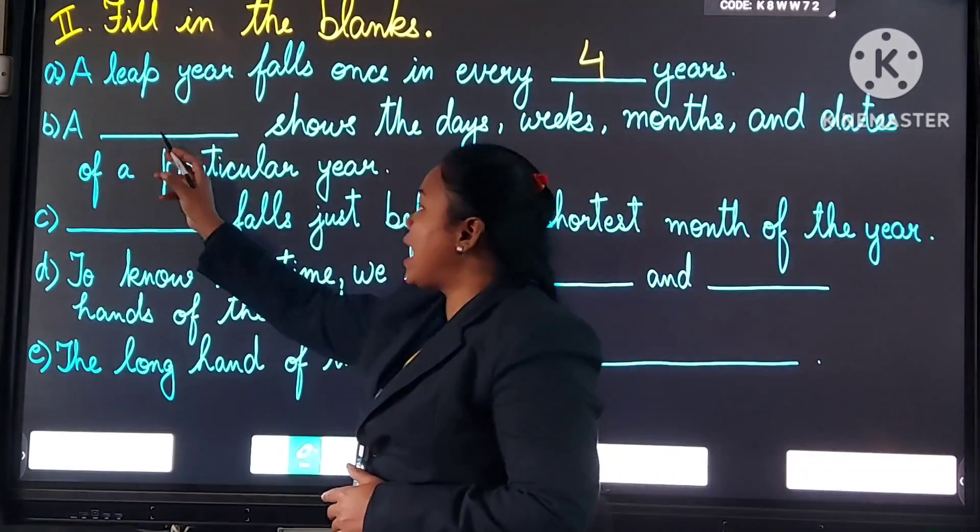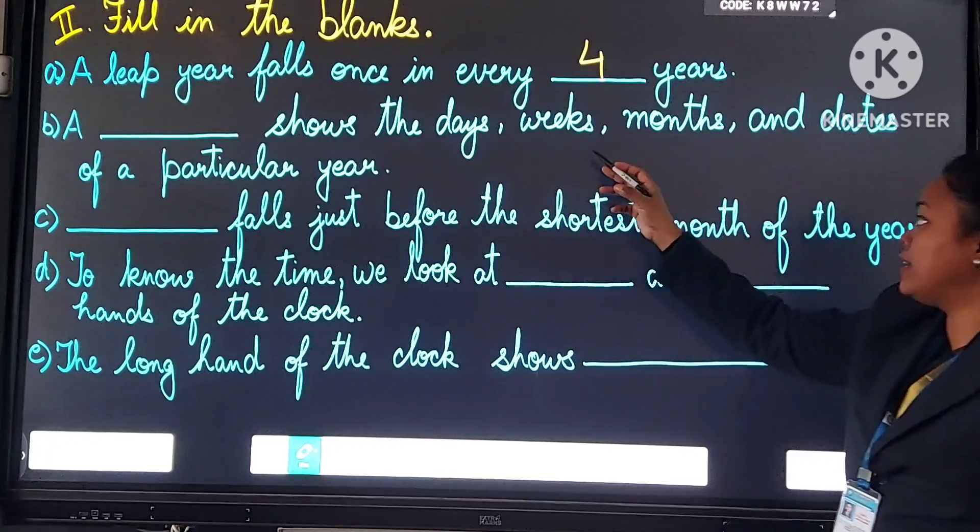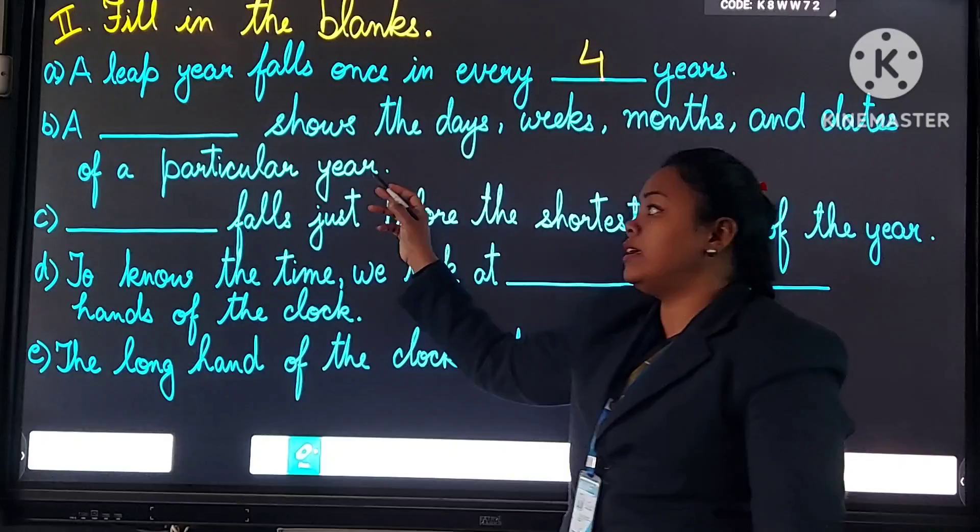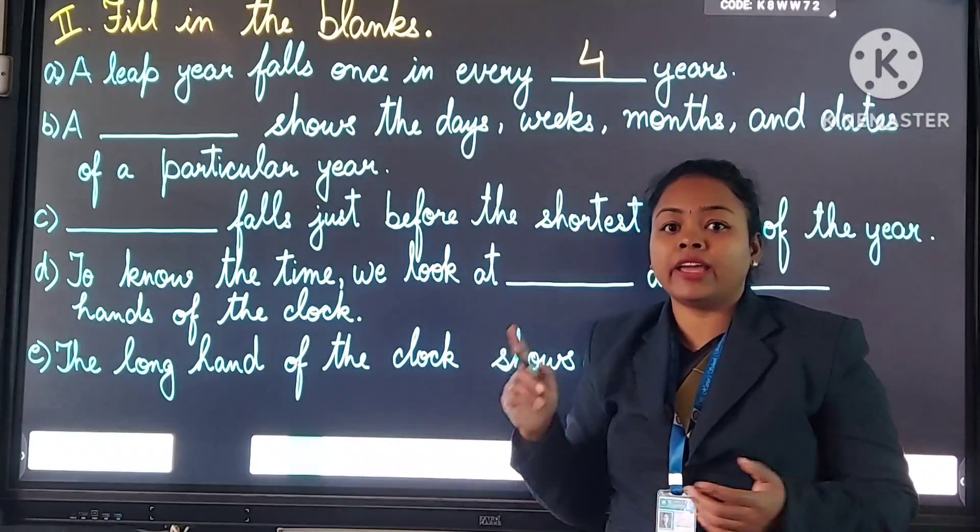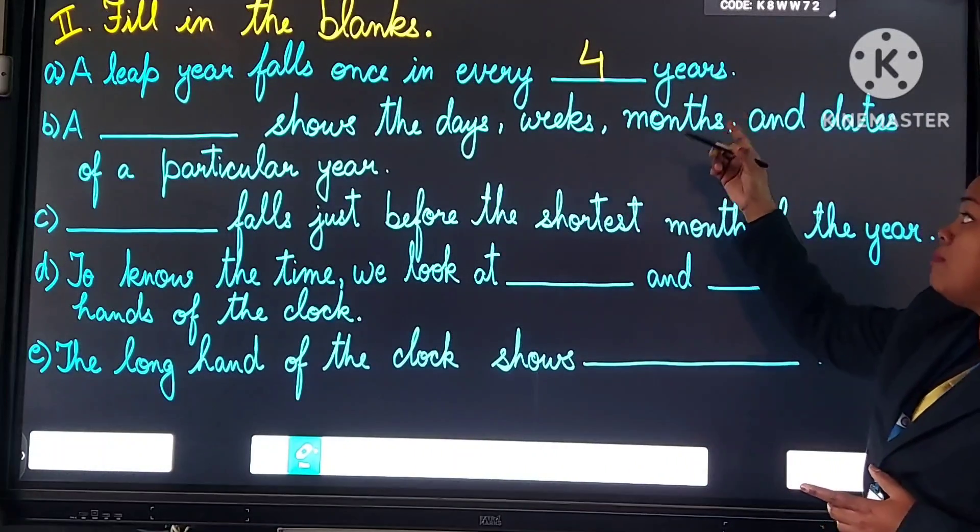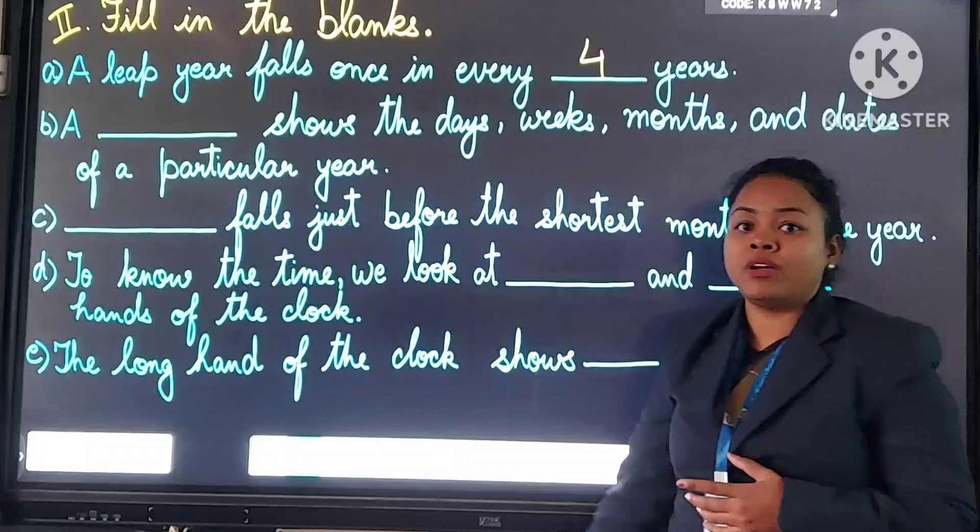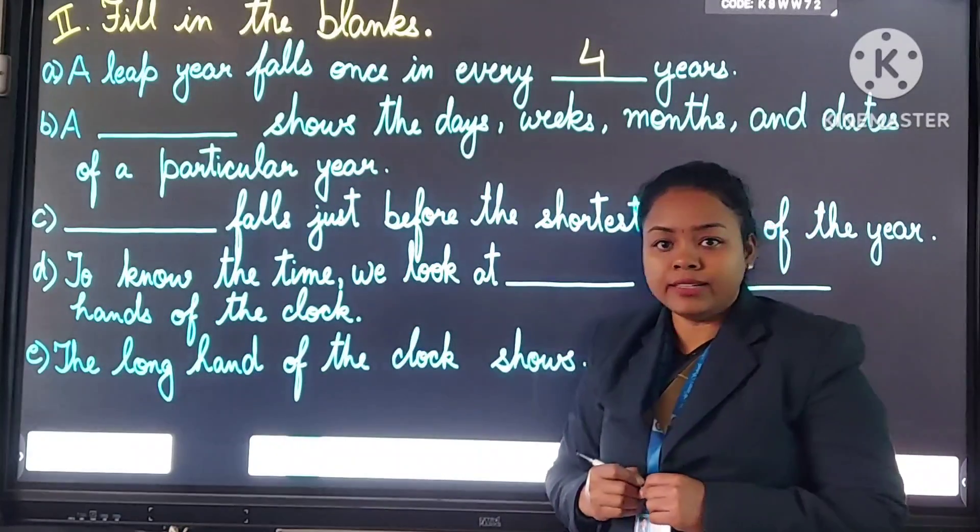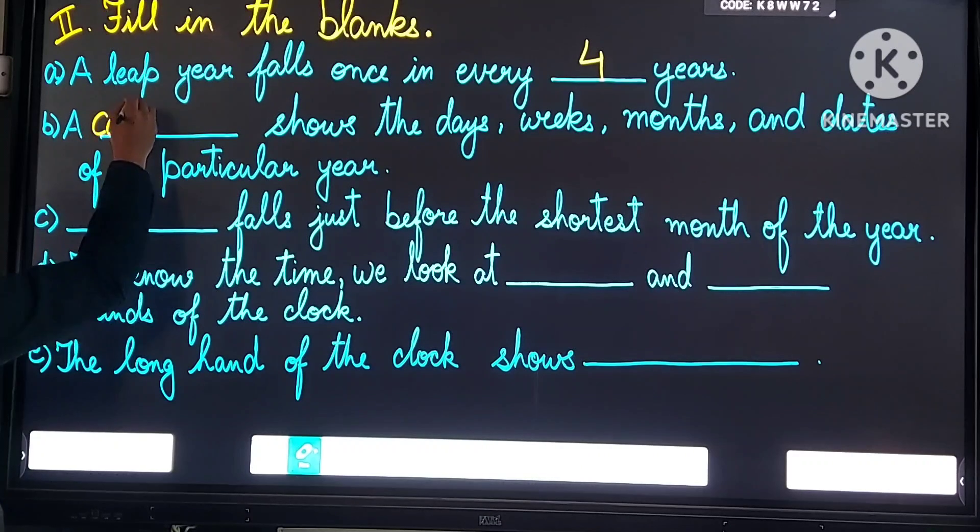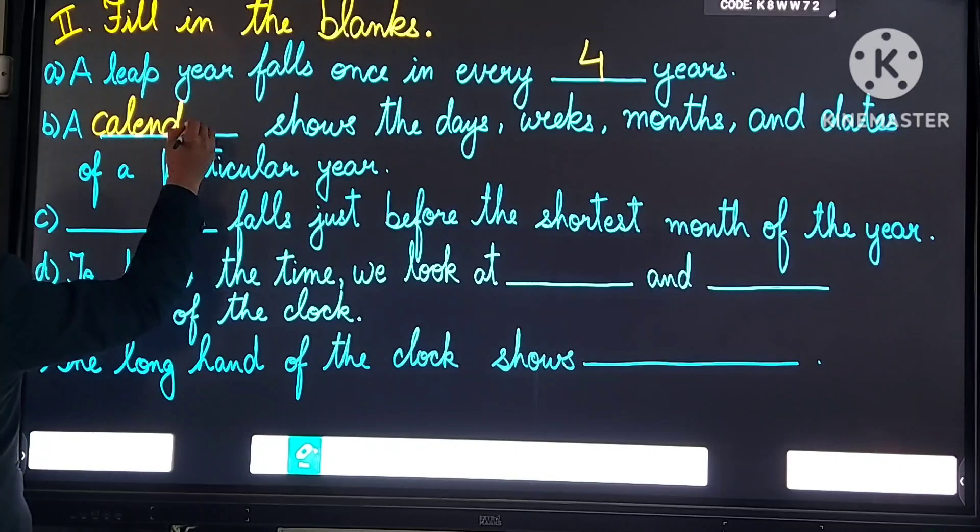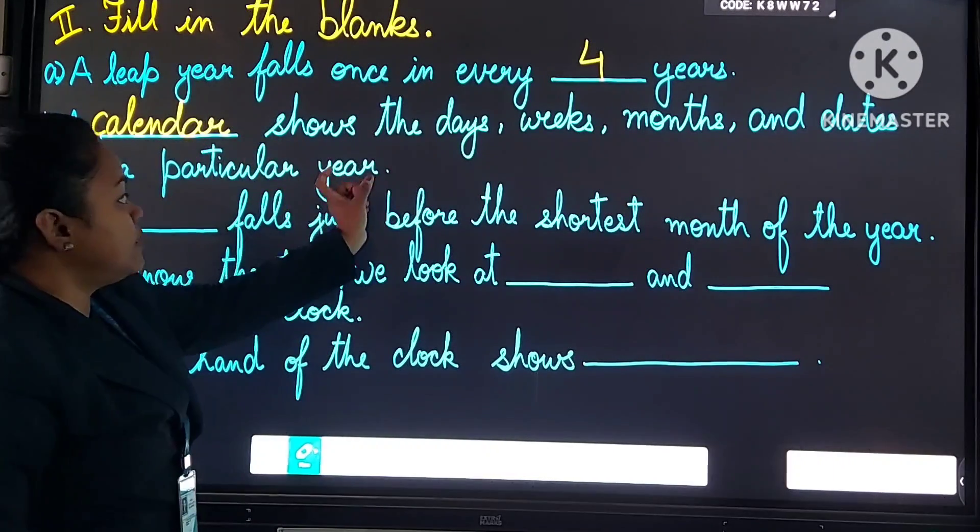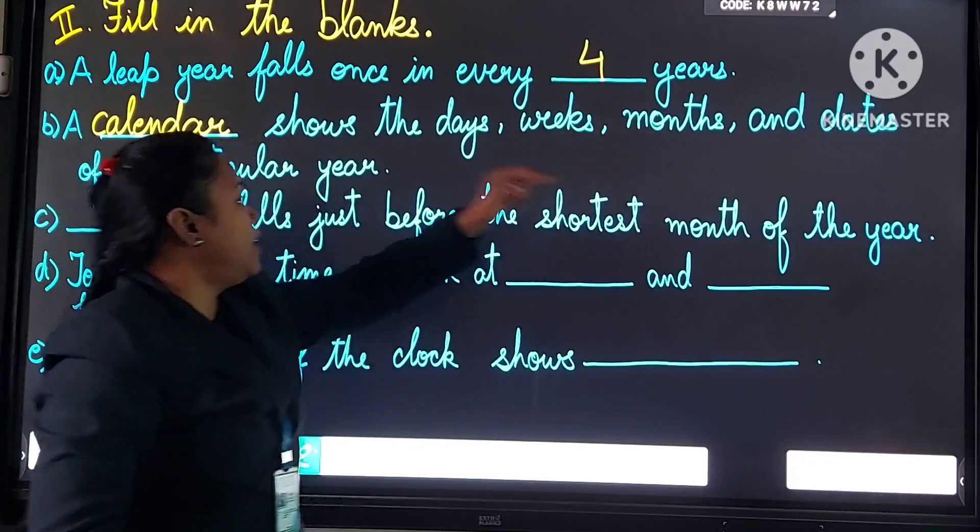Number B. A dash shows the days, weeks, months, and dates of a particular year. Kya cheez show karti hai? Ek particular saal ke dates ko, weeks ko, months ko, and dates ko. Answer will be calendar. We will write this kalhe: C-A-L-E-N-D-A-R. Now calendar shows particular years, days, weeks, months, and dates.